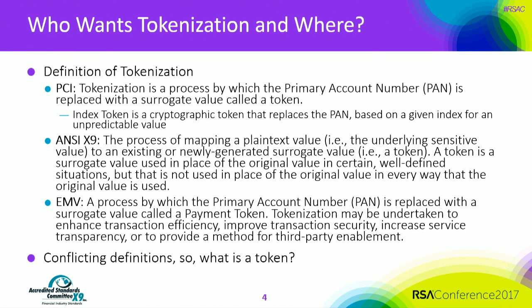ANSI, the American Standards Institute X-9 committee, has another definition which is in a standard currently in development and in ballot. That particular definition is a bit more broad: it's the process of mapping a plain text value — the underlying sensitive value, which we call a USV — to an existing or newly generated surrogate value, the token. The token is that surrogate value used in place of the original value in certain well-defined situations, but not used in place of the original value in every way. Sometimes you use a token, sometimes you don't.